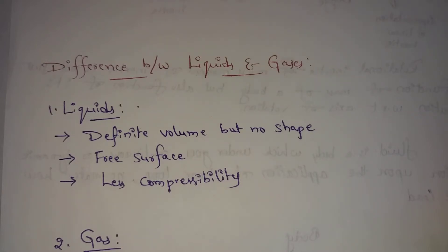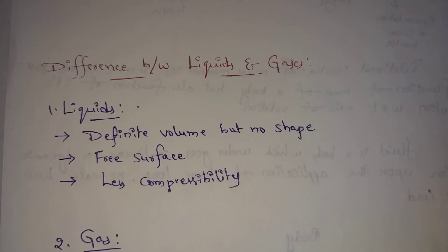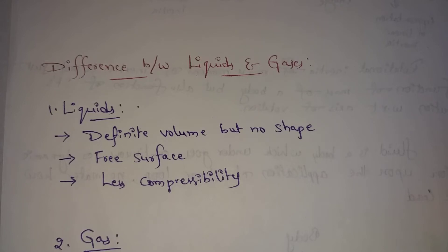First, liquids. Liquids have a definite volume but no fixed shape — they take the shape of their container. For example, water has a definite volume. If you put it in a jar or a tub, it takes the shape of that container. Liquids also have a free surface.